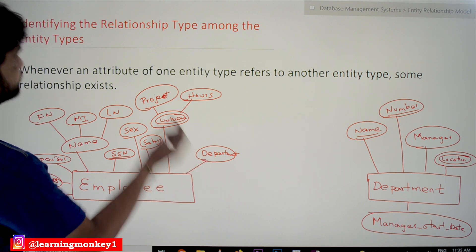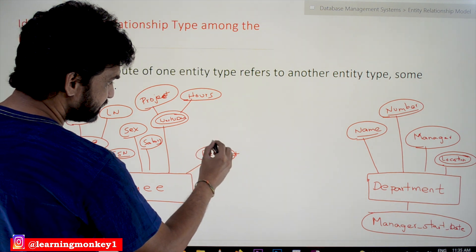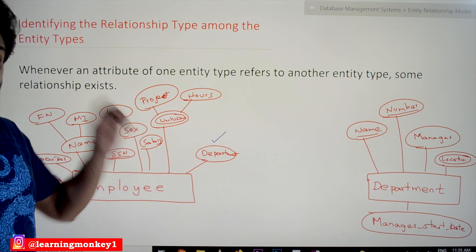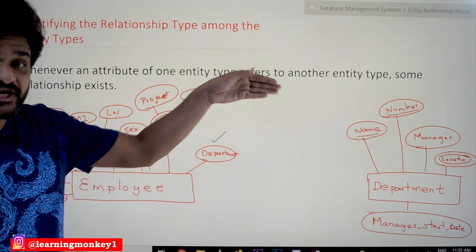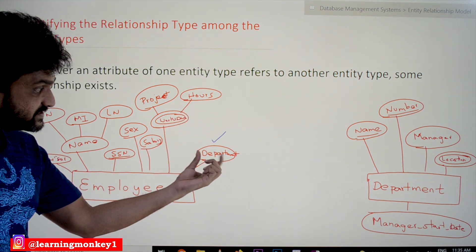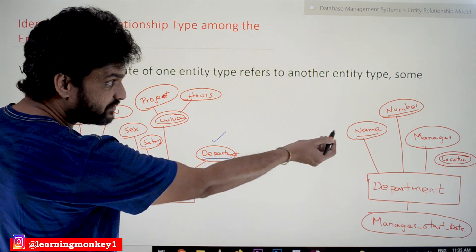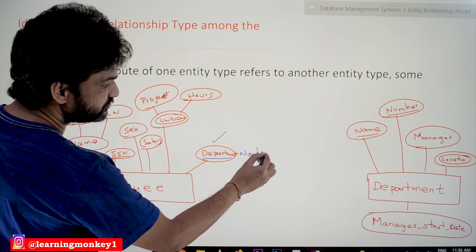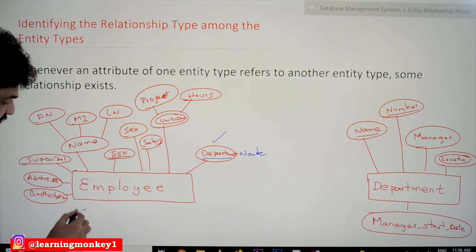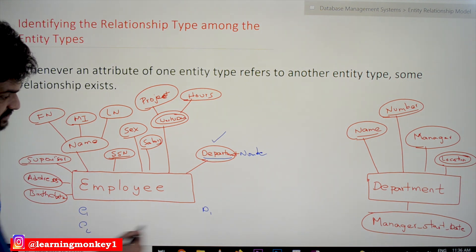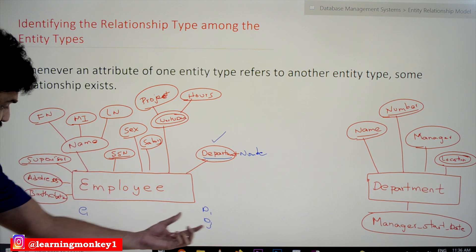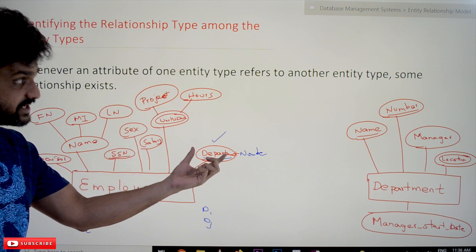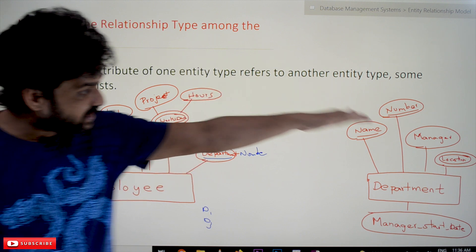If you look at the employee entity, it has a department number attribute. Assume this is the department number in which the employee is working. From the requirements, we identified that every employee works in a department, and based on that requirement we have this department attribute. It may be the name or number of the department — let's assume it is the department number, which uniquely identifies each department. So employee E1 works in department D1, employee E2 works in department D3.